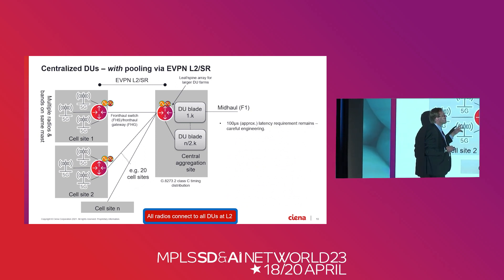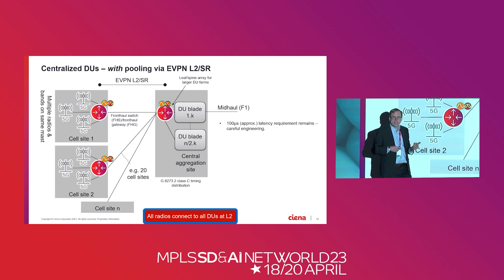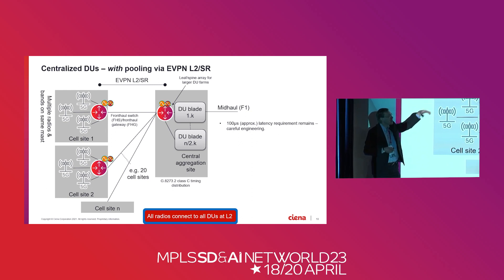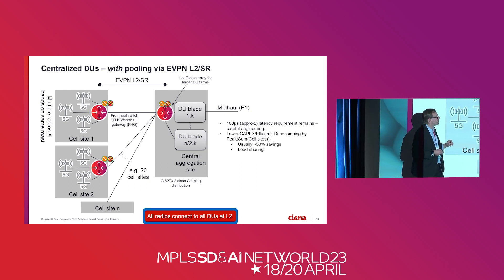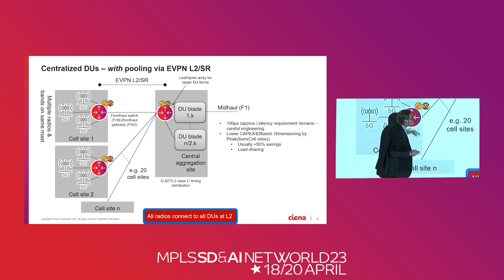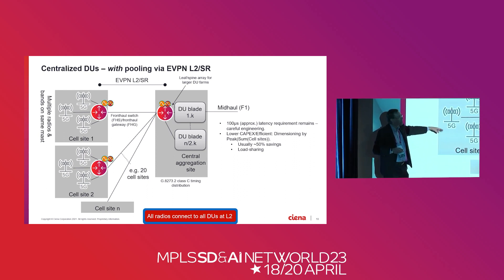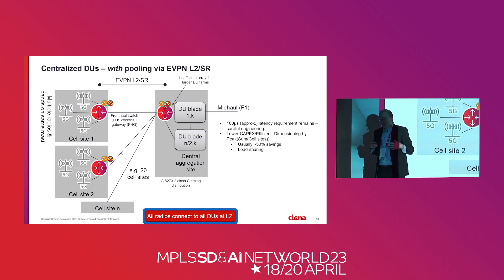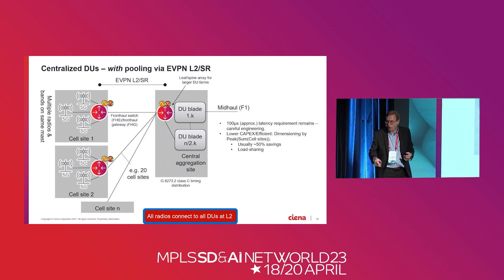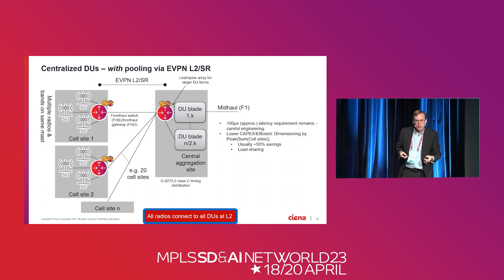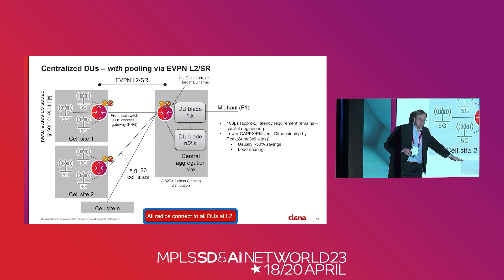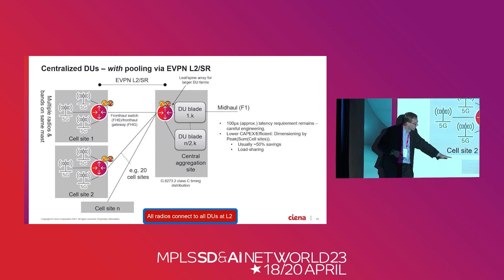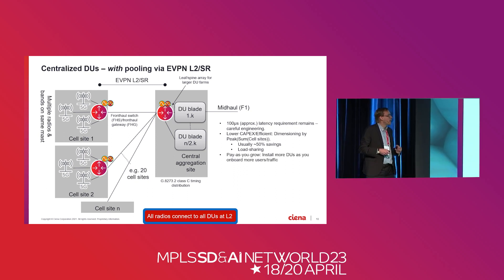Let's work through them. Firstly, latency — with fronthaul, latency is everything. You must have careful engineering, but SR or Flexi can deliver these very low latencies with careful engineering. Our dimensioning has now gone to the peak of the sum of the cell sites — so if one is low but another is busy, your sum is lower than the sum of both peaks. That's giving the roughly 50% savings we're talking about. That load sharing is dynamic as the load changes from day to night. If you've got a major event in the evening, that cell site is very busy while all the others are quiet.